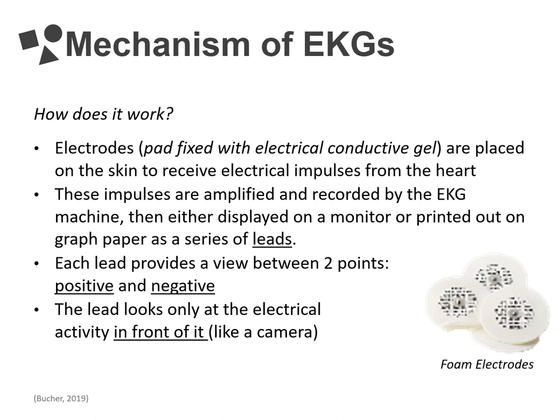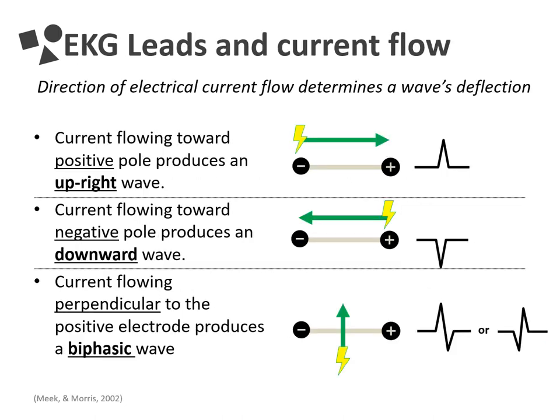EKGs work by collecting information from the electrodes placed on the patient's skin and transmitting them to a machine that can amplify and record these signals either on a monitor or onto graph paper. A picture of what these electrodes look like is in the bottom right corner of the slide. Sometimes healthcare providers will call the foam electrodes leads, but technically the lead is the view between two electrodes. Each lead only looks at the electrical activity in front of it, so you can imagine each lead as a single camera looking at the heart. We use multiple leads to get a picture from multiple angles. The direction the wave in an EKG tracing points in, also called its deflection, will depend on how the direction of electrical current flow compares to the lead position — or camera position, to use our earlier metaphor.